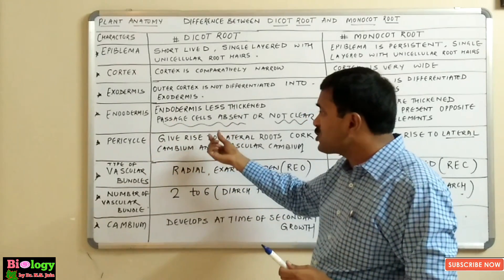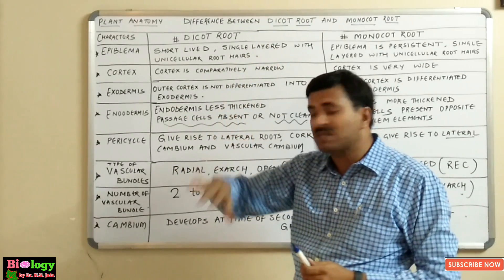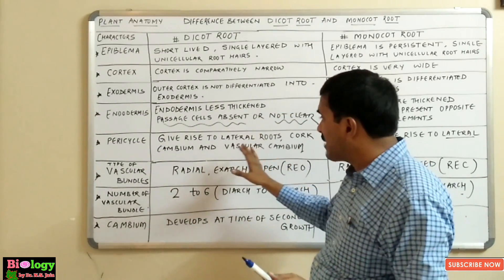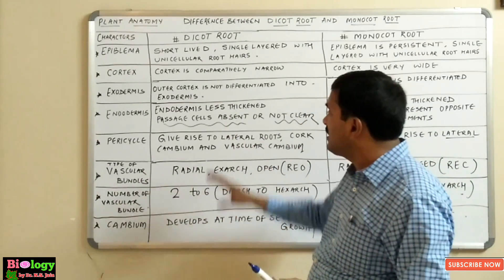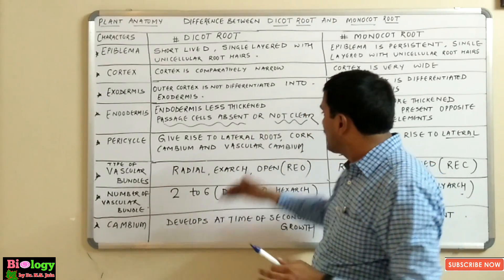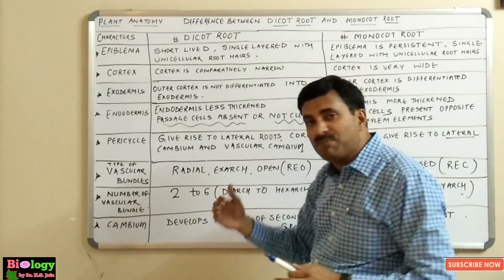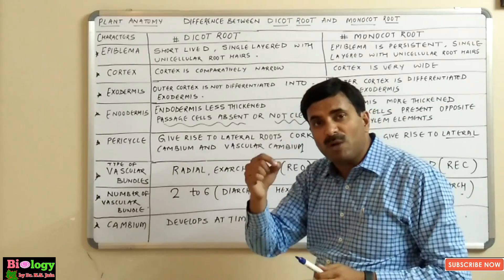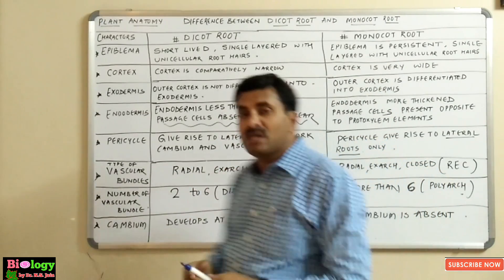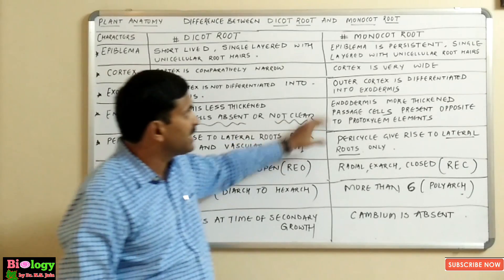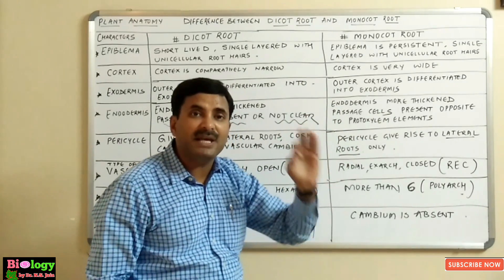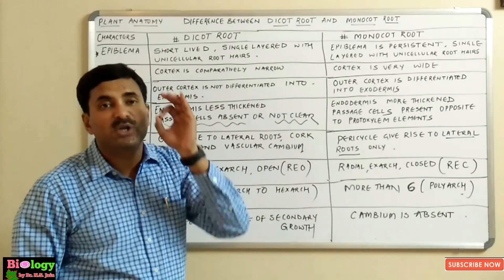In the dicot root, the pericycle is single-layered and made up of parenchyma. Its chief functions are: giving rise to lateral roots, forming cork cambium, and forming a small part of the vascular cambium. In the monocot root, the pericycle is also single-layered parenchyma, but it only gives rise to lateral roots — it does not form cork cambium or vascular cambium.